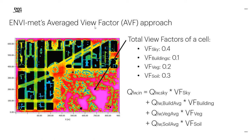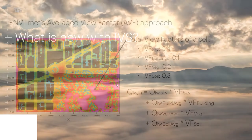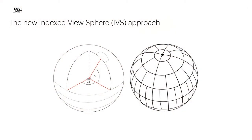This is the default setting when IVS is not used. IVS stands for Indexed View Sphere. This new approach is quite different from the average view factor approach. Every cell now shoots rays at user-defined angles and looks at what it sees in each direction, creating facets. For all these facets, it stores not only which object type is seen — tree, building, sky, soil — but which specific building, which part of a specific tree, which part of the soil is being seen.